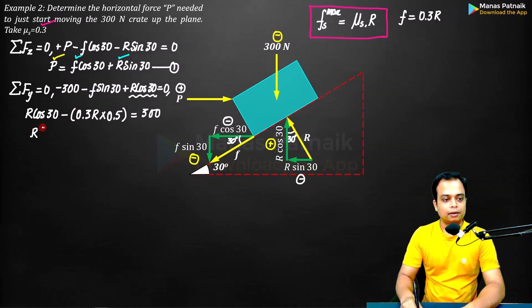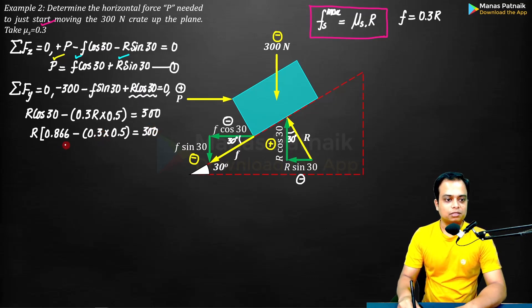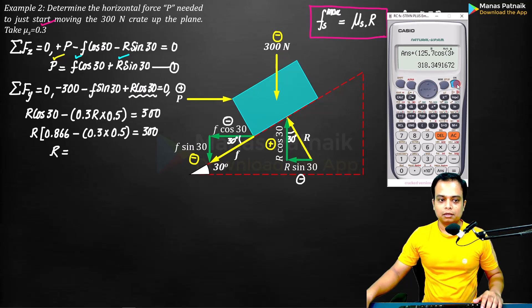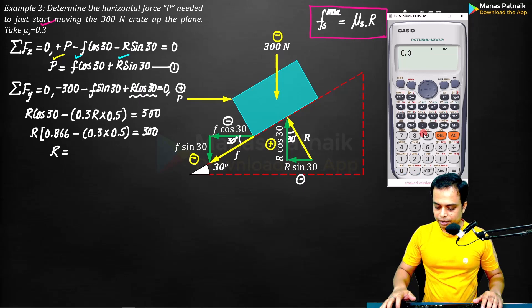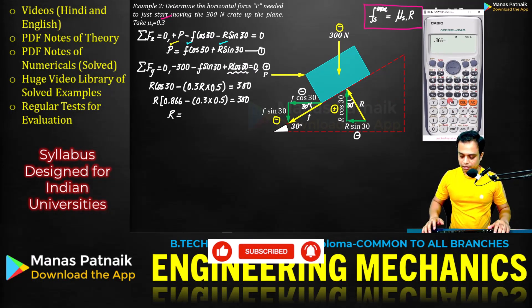So we can take R as common and the stuff remaining inside will be... let me just write this R. This is going to be cos 30, which is 0.866. What else? This is going to be negative 0.3 times 0.5, equal to 300. All that is left in the problem is simply the math. R can be computed very easily. Let me get the calculator out.